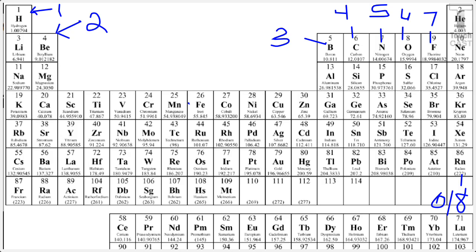Group 2 is called the alkaline earth metals. And all of the elements in this group have 2 valence electrons. Group 13 is called the boron family because boron is the first element in the group. And all the elements in this group have 3 valence electrons. Group 14 is the carbon family, named after carbon. And the elements in this group have 4 valence electrons.